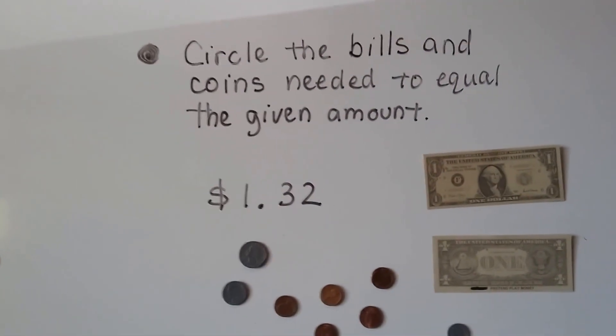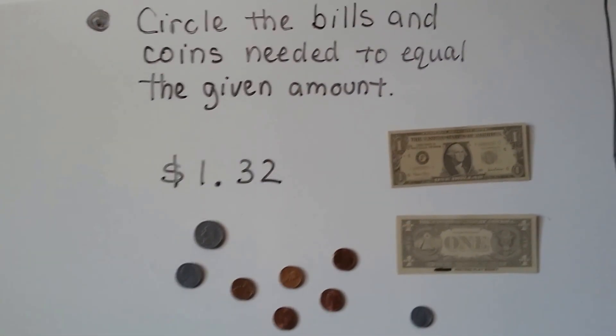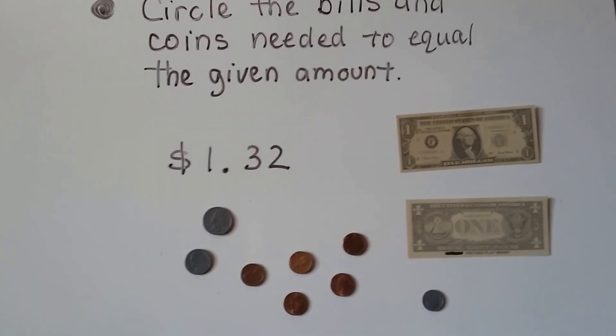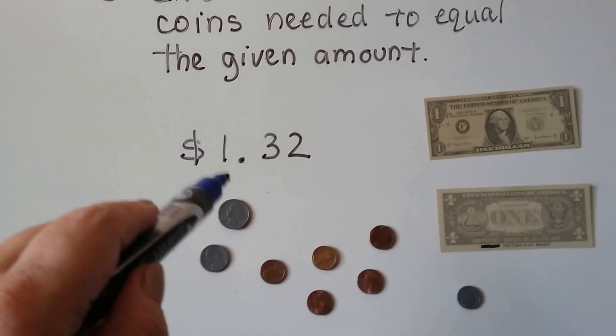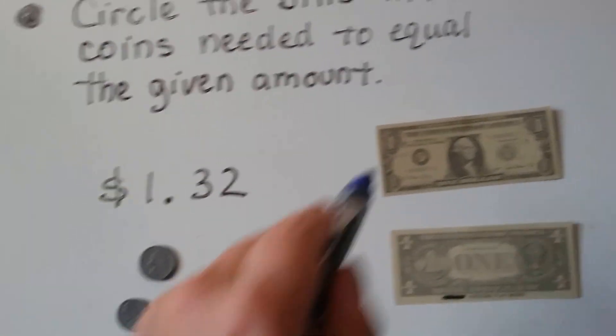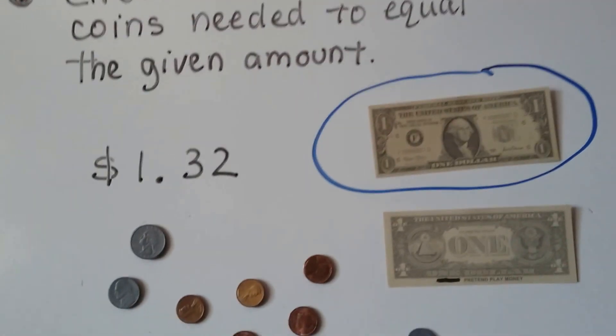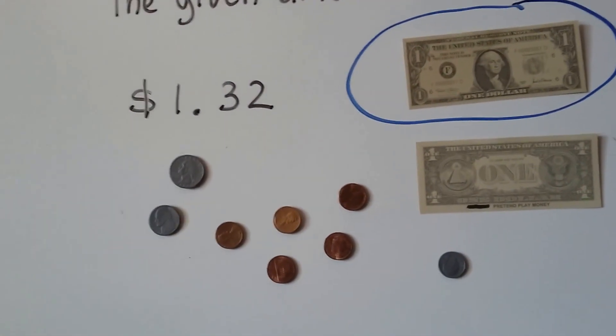All right. Let's circle the bills and coins needed to equal the given amount. We need to circle the bills and coins that will be $1.32. So we only have one dollar that we need so we can just circle one of the dollars, right? We don't need the other one.